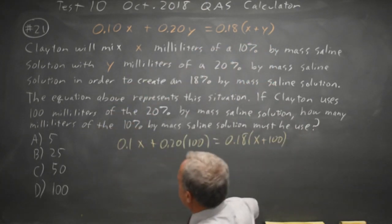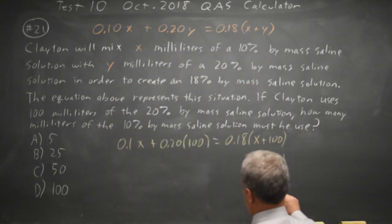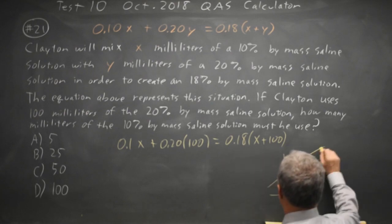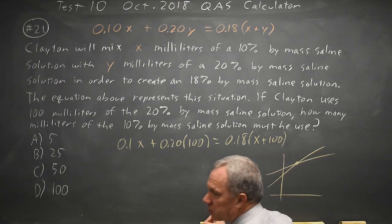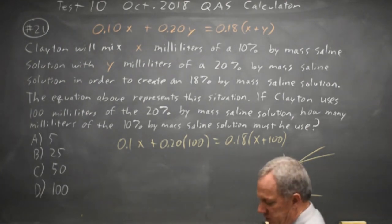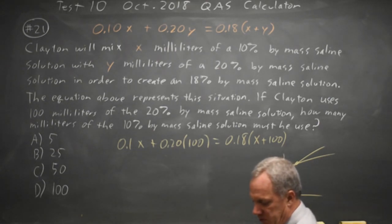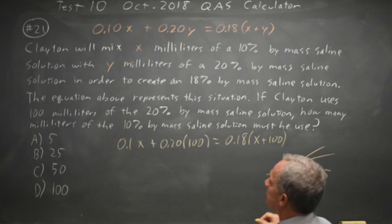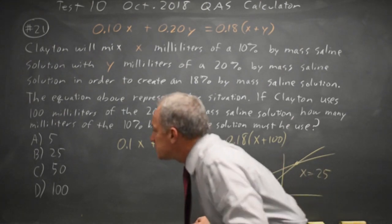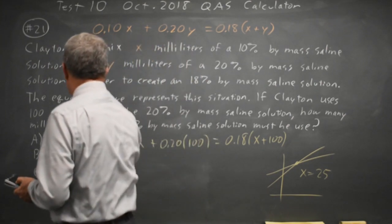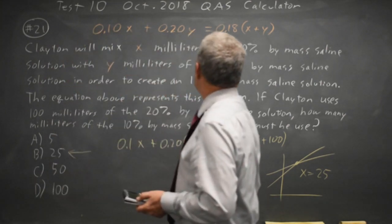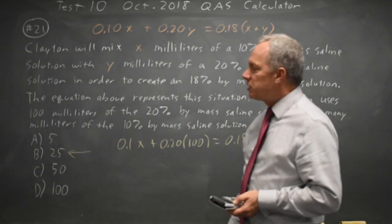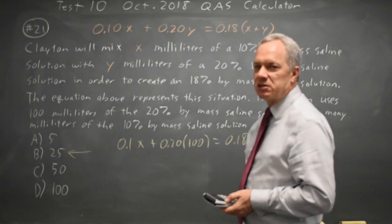So in the graphing calculator second trace choice 5 for intersect, hit enter three times on the TI-83 or 84, x equals 25, and it makes sense that if we want to be closer to 20% than 10%, the amount of 20% solution will be substantially more than the amount of 10% solution, so that seems reasonable.